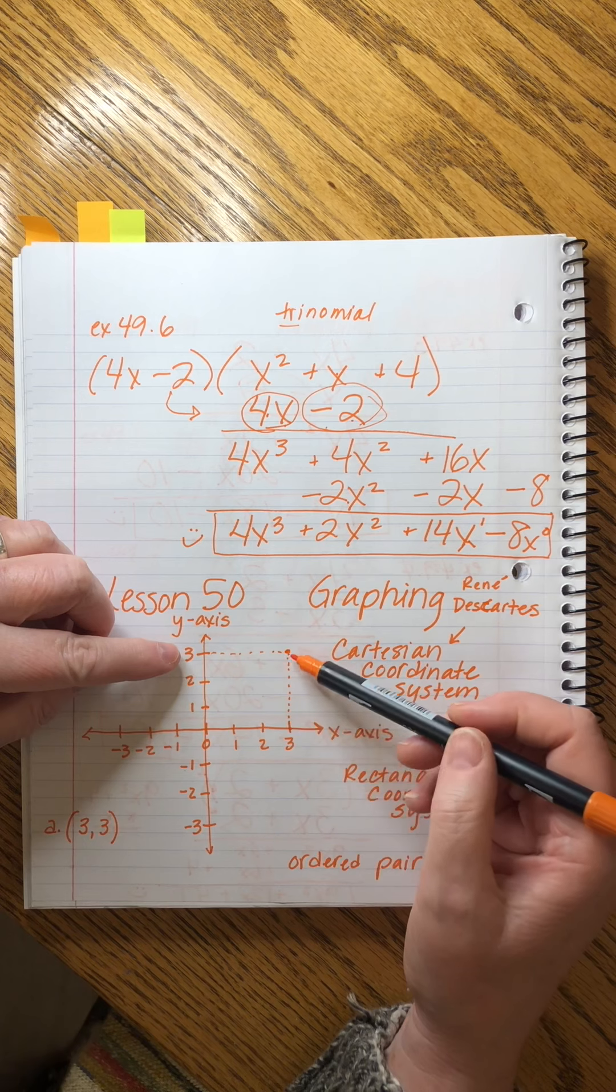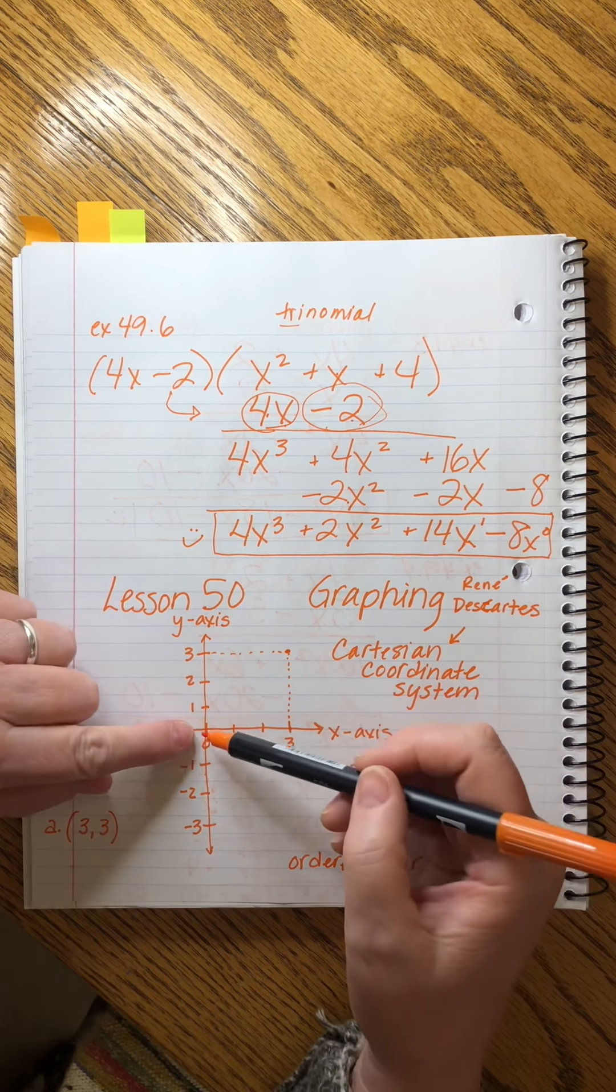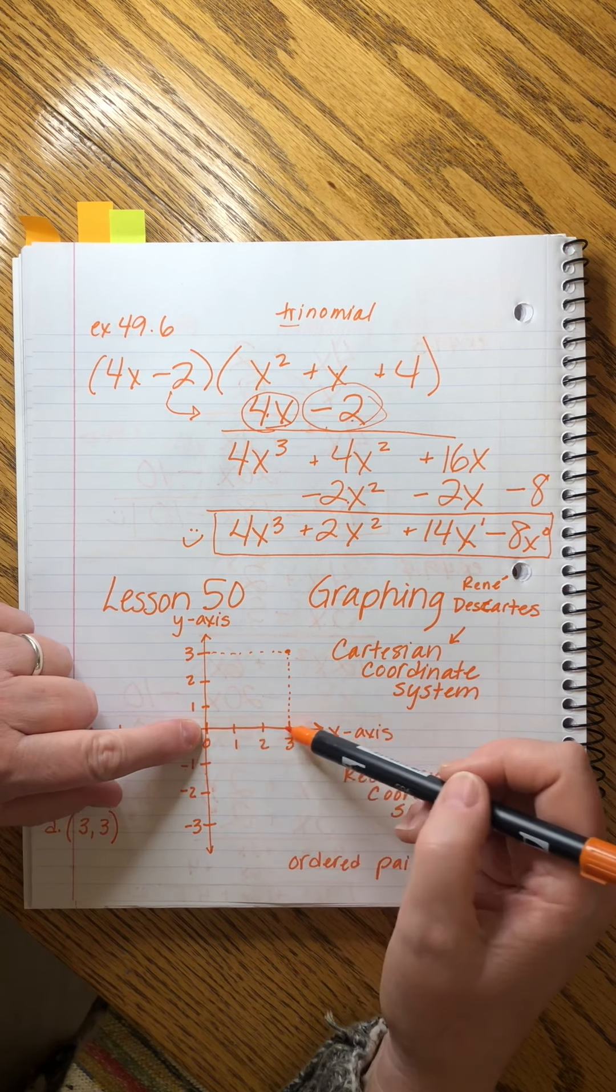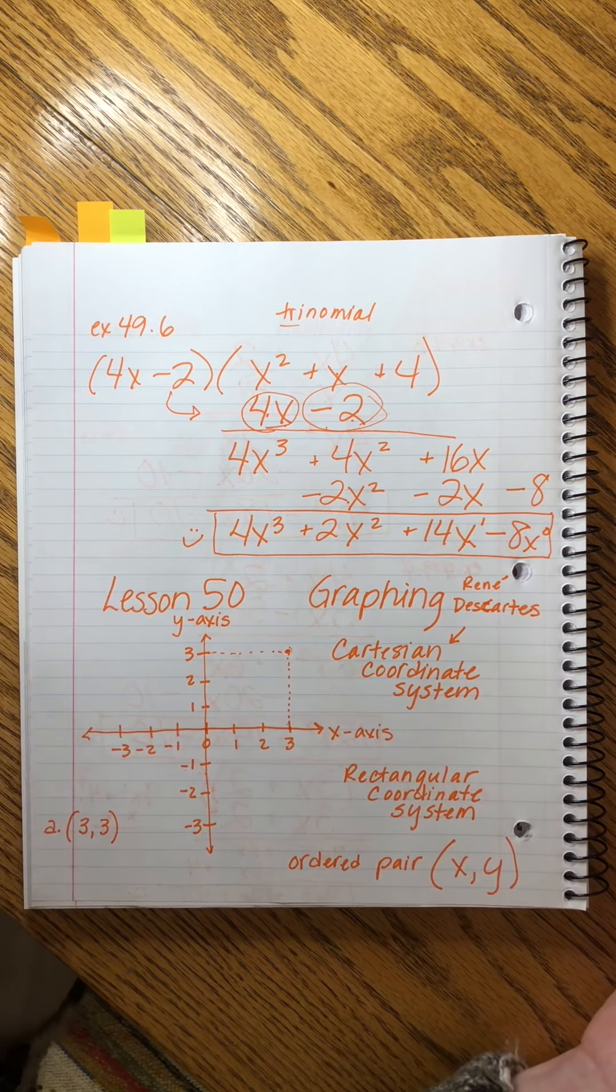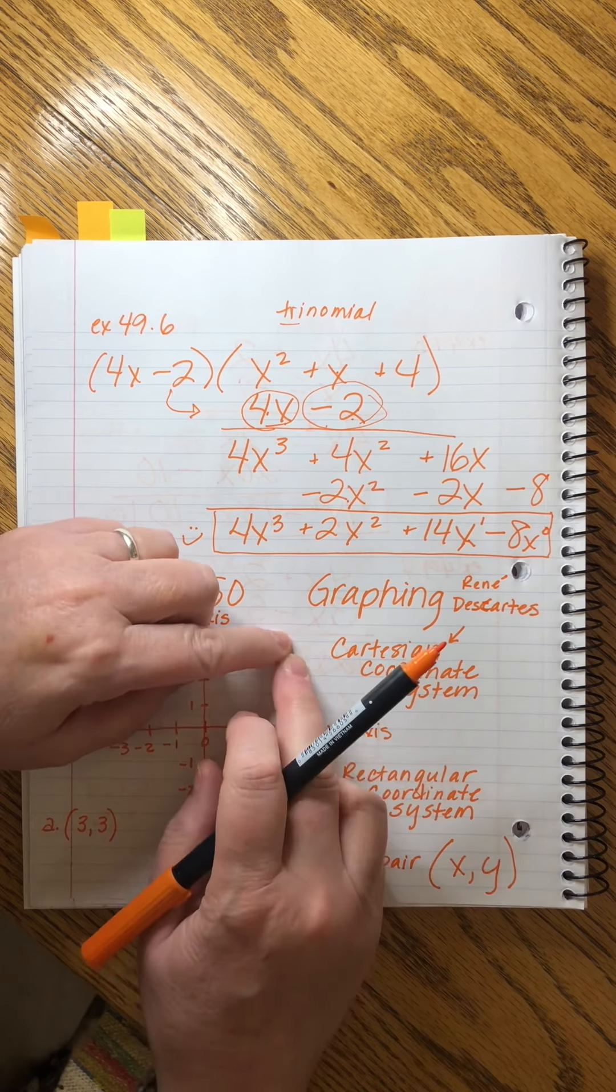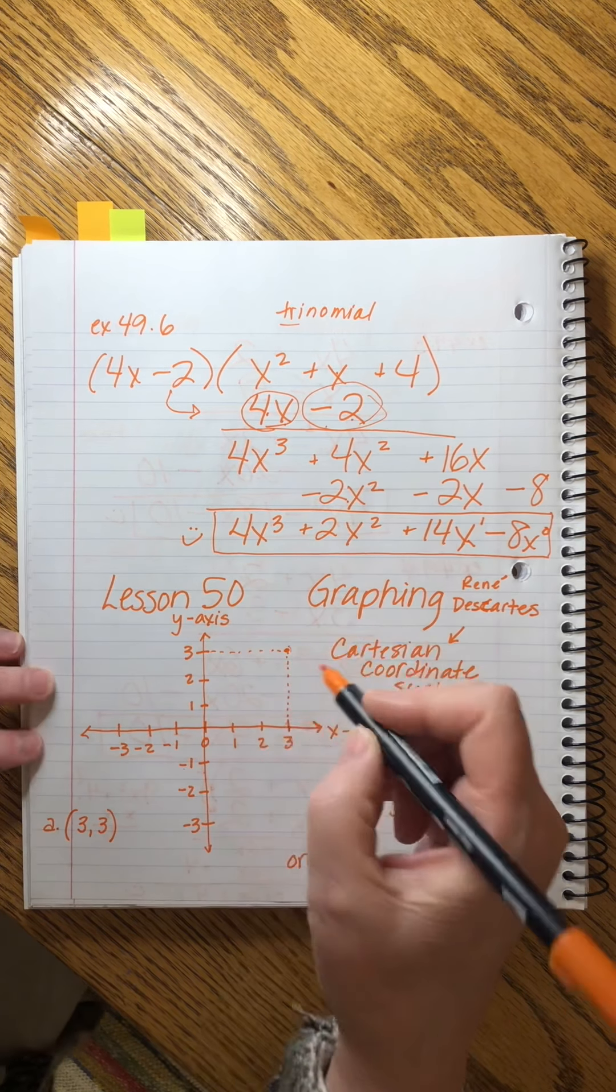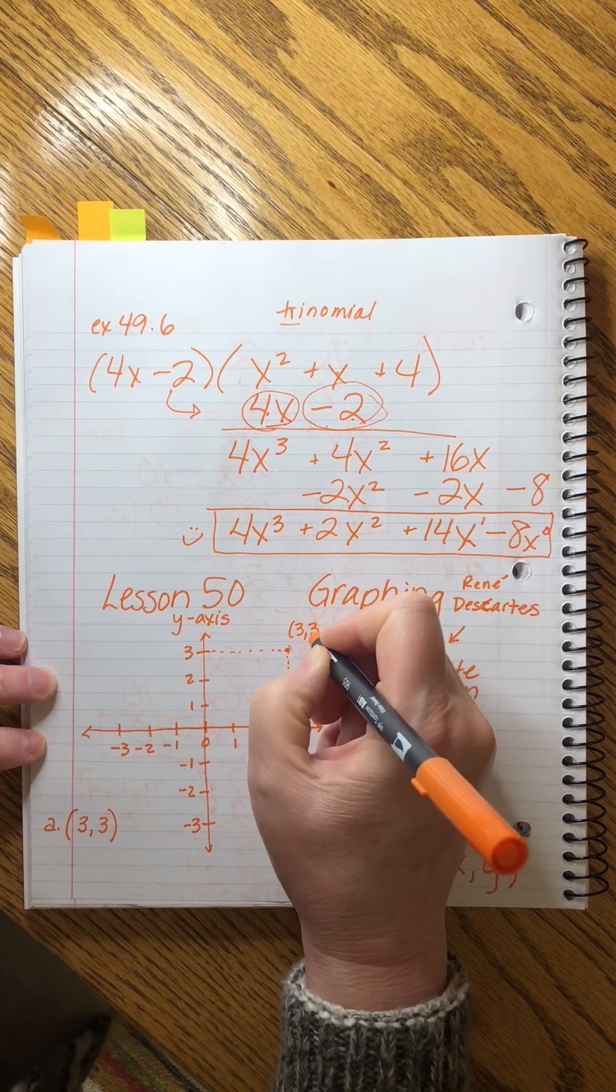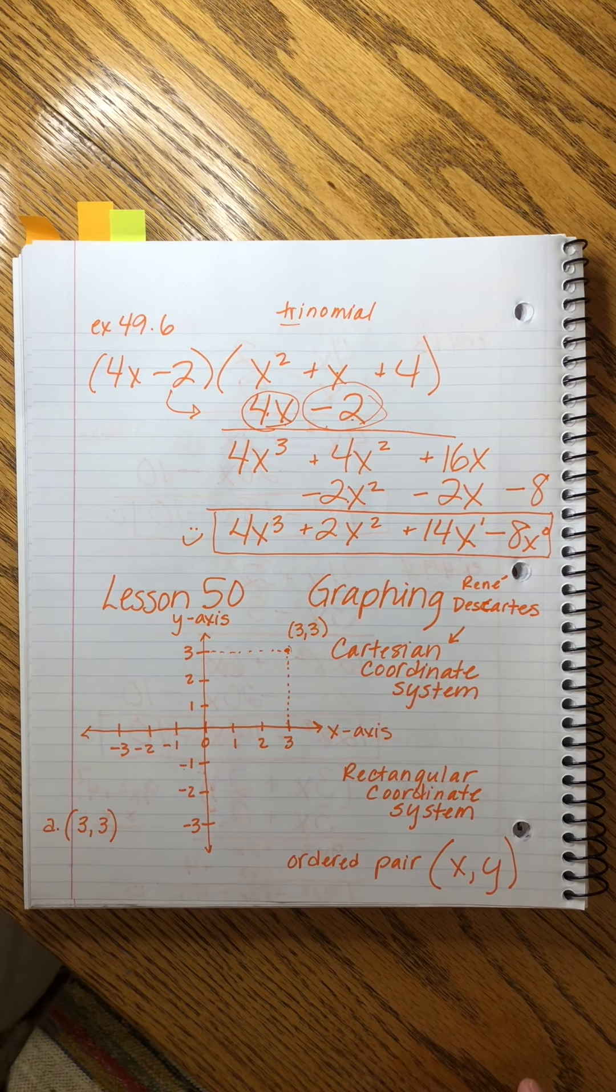And that's why they call it rectangulars, that we don't always have to draw these lines as dotted, but we see that from the origin, where the zeros are, we kind of draw a rectangle out from the x-value and the y-value, and where they meet, that is our point. So this is point A, which was (3, 3). Make sense?